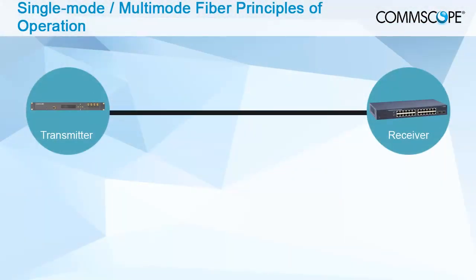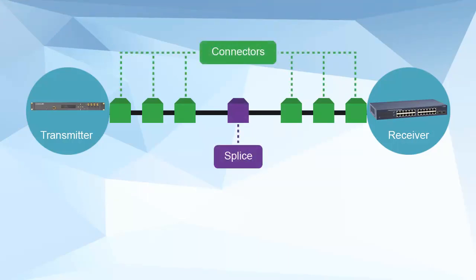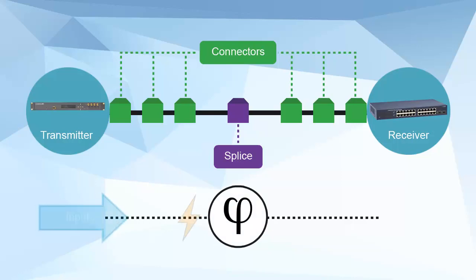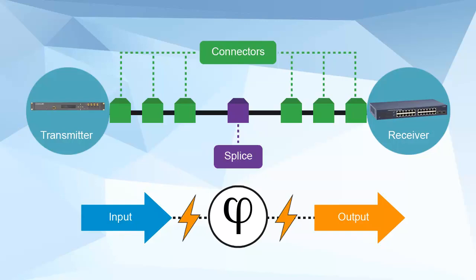For a fiber optic span, the effects of passive components and connection losses must be added to the inherent attenuation of the fiber in order to obtain the total signal attenuation. This attenuation or loss for a given wavelength is defined as the ratio between the input power and the output power of the fiber being measured. It is generally expressed in decibels.